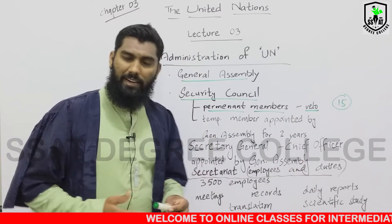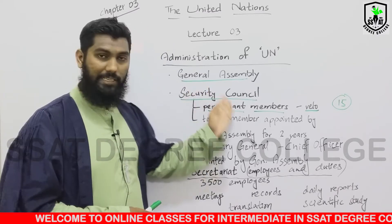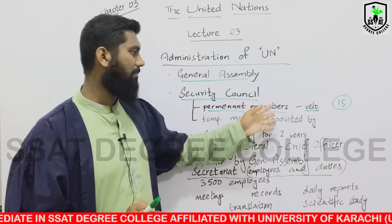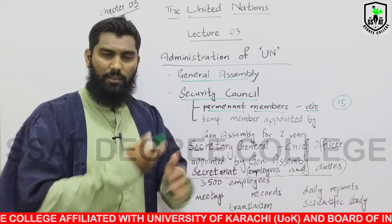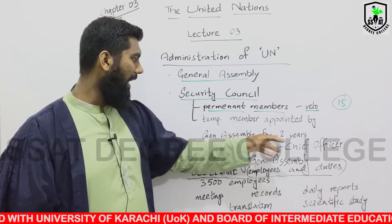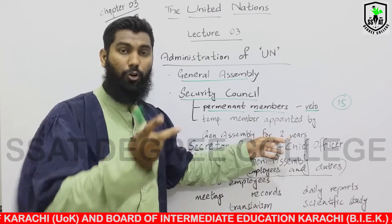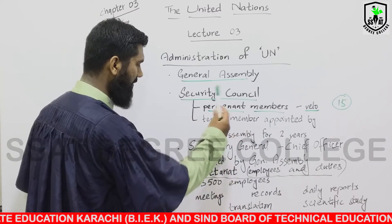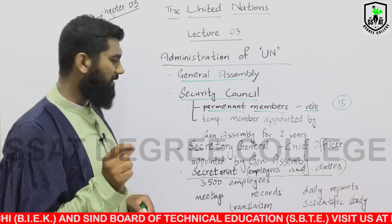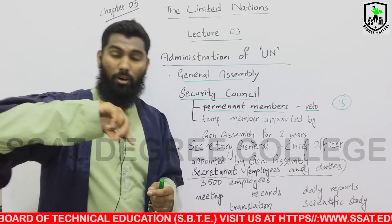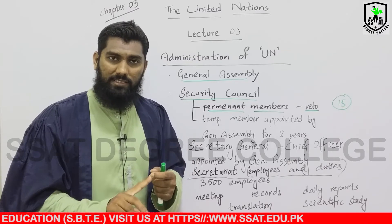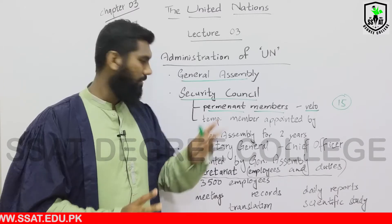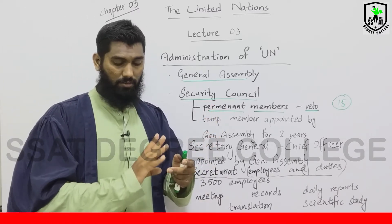If I talk about the permanent members of the Security Council — from the very beginning of the foundation of the UN, UK is the permanent member of the Security Council, US is the permanent member of the Security Council. Similarly, China, Russia, and France — these all are the five permanent members from the beginning of UN.